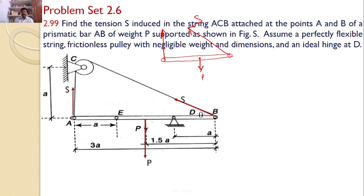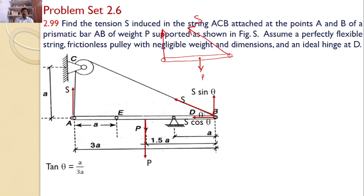Let this angle be theta. Since S is an inclined force, we need to resolve it along horizontal and vertical components. First, we need to find this angle theta. By considering the right-angle triangle ABC, we can find the value of theta. That is, tan(theta) = A / 3A, giving theta = 18.4°.